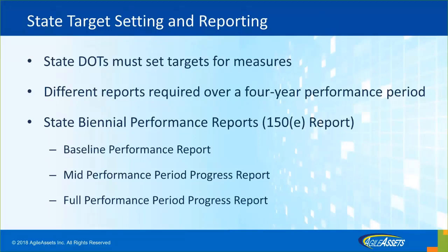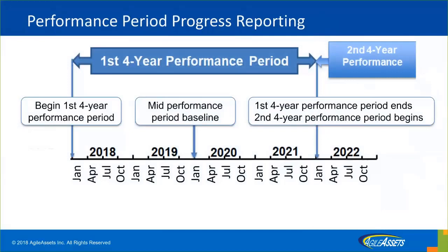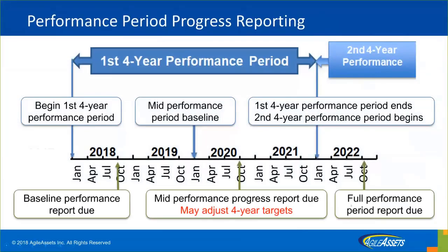Four reports are required. The first is a baseline performance report — you need to know your current standing as of today, your two-year target, and your four-year target, and submit it to U.S. DOT. This is the timeline for those reports: on October of 2018, 2020, and 2022, they need to submit the initial report and then progress reports to show how they achieved those targets.